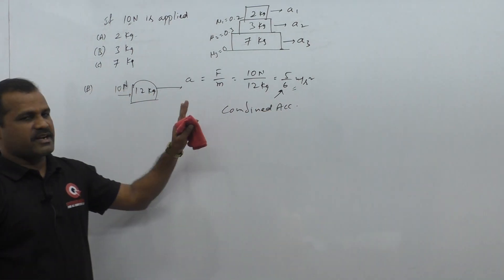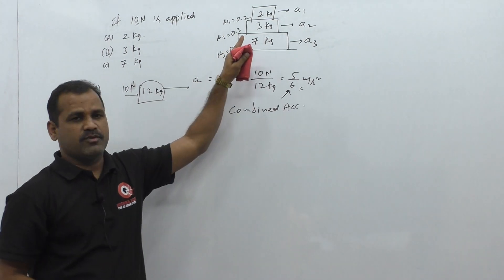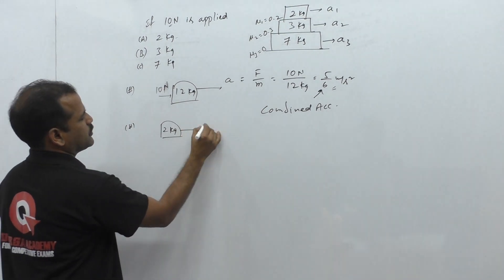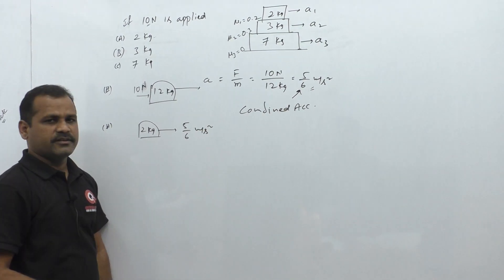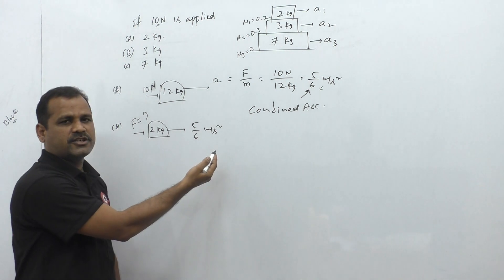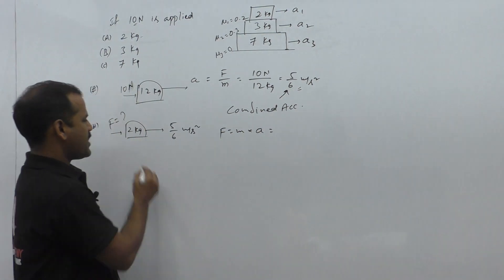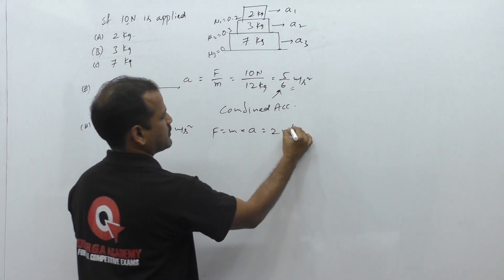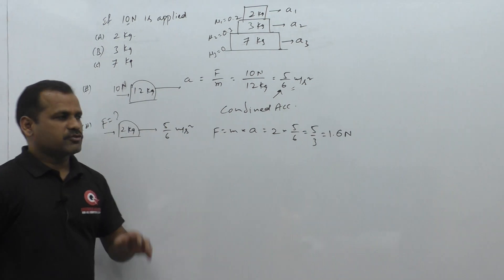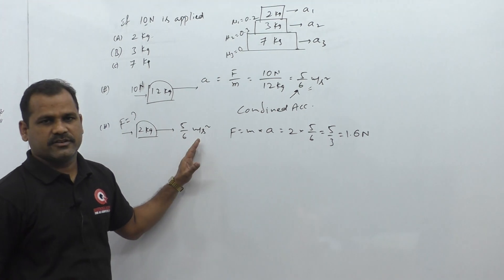Now we find the required force for each block to achieve the combined acceleration of 5/6 m/s². For the 2kg block, the required force is mass times combined acceleration: 2 × (5/6) = 5/3 ≈ 1.6 newtons required to keep the 2kg block moving at the combined acceleration.